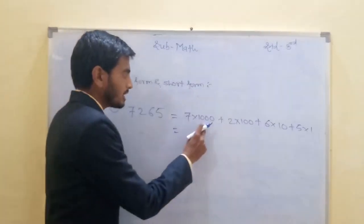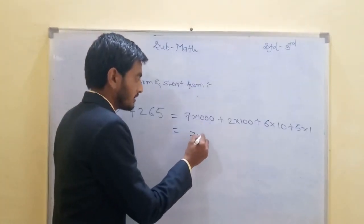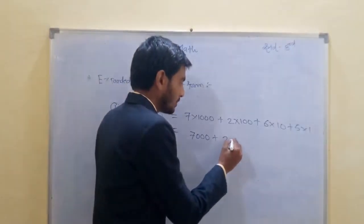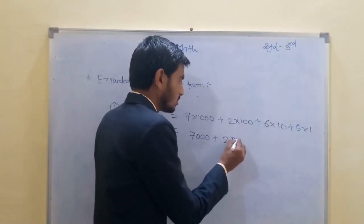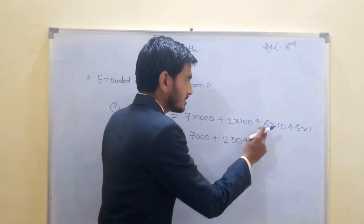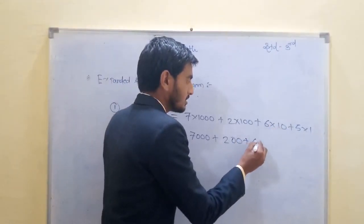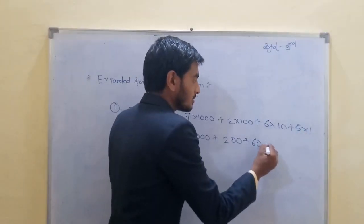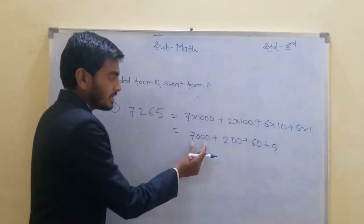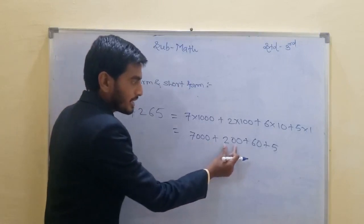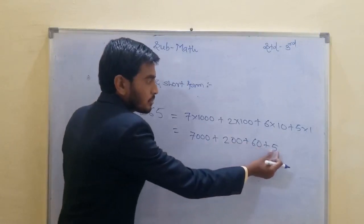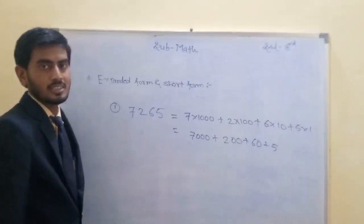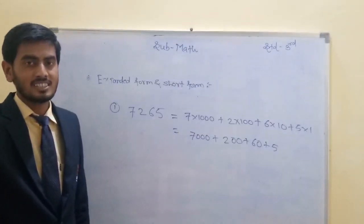Multiply all. 7 multiplied by 1000 is 7,000. Plus 2 multiplied by 100 is 200. Next, 6 multiplied by 10 is 60. And last, 5 multiplied by 1 is 5. So the expanded form is 7,000 + 200 + 60 + 5. This is the expanded form of 7,265.